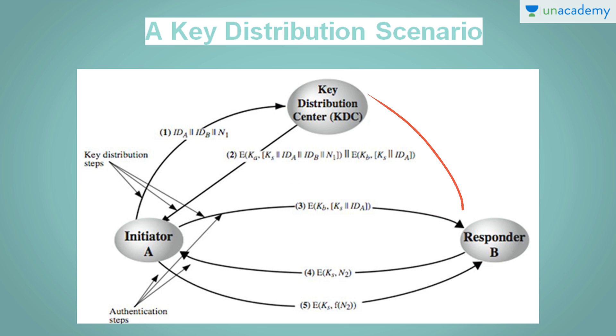So first what happens, A issues a request to the KDC for a session key to protect a logical connection to B. Now, this message includes the identity of A and B and a unique identifier. Now, what is this unique identifier? This identifier may be a timestamp, a counter, or a random number. The minimum requirement is that it should differ with each request. Also, to prevent masquerade, it should be difficult for an opponent to guess the identifier.